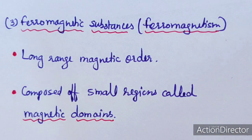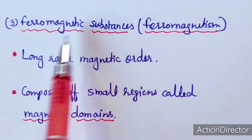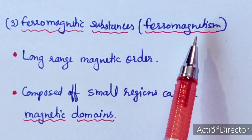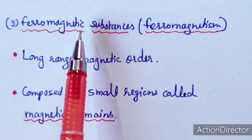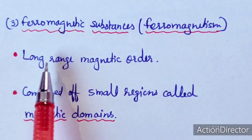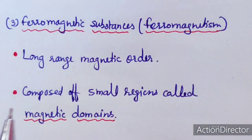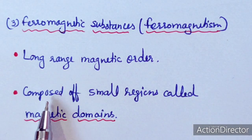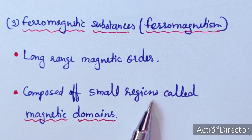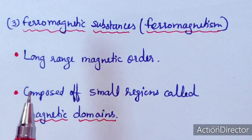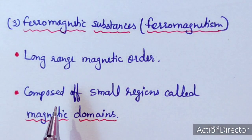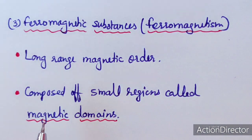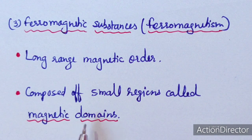Now we will discuss the magnetically concentrated ferromagnetic substance. Ferromagnetism is a long-range magnetic order. It is supposed that ferromagnetic substances are composed of small regions called magnetic domains, and their magnetic property can be explained with the help of domain theory.